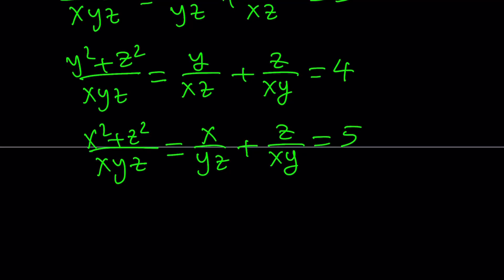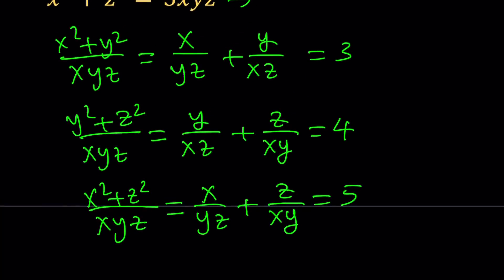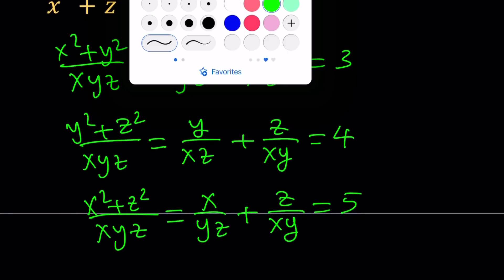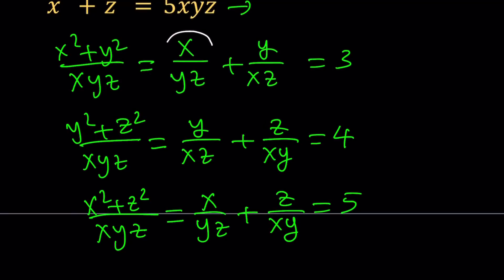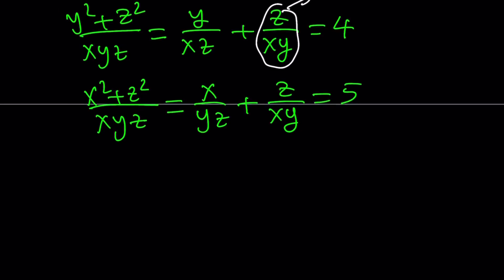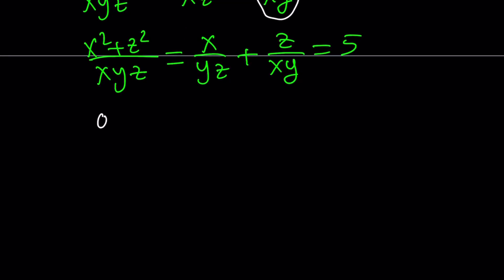Now, to solve this as a system, I'm going to use substitution. And I want to name these something to make it a little easier on ourselves. So let's go ahead and call this A. Let's call this B. And let's call this C. And from here, we get a really nice system, which is A plus B is equal to 3, B plus C is equal to 4, and A plus C is equal to 5.